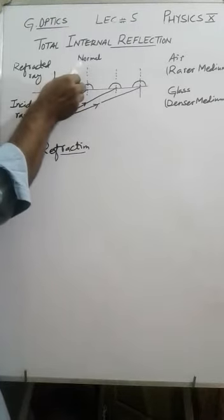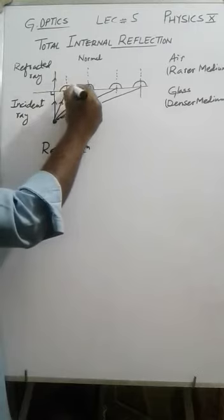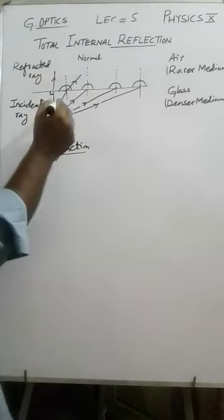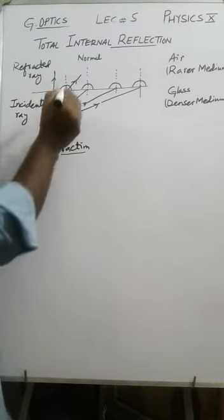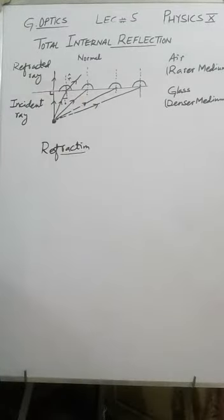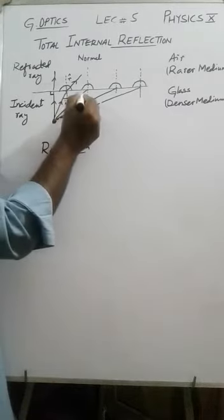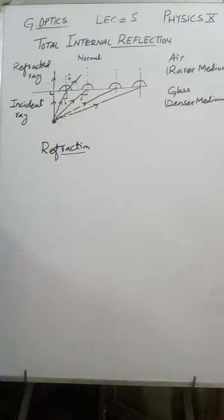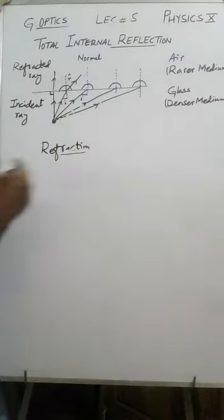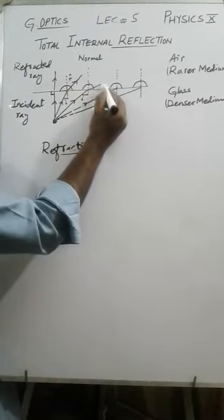The ray bends away from the normal, not towards the normal. This is the incident ray, giving us an angle of incidence and an angle of refraction. When the angle of incidence increases, the angle of refraction also increases — meaning the ray of light will bend more.